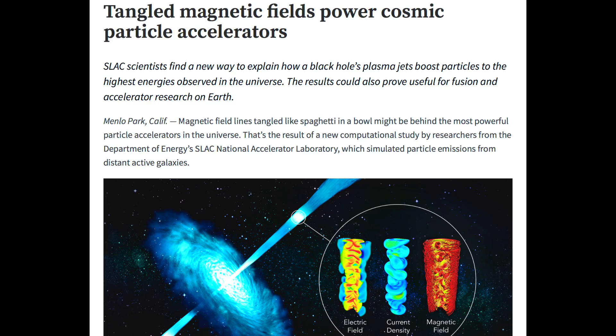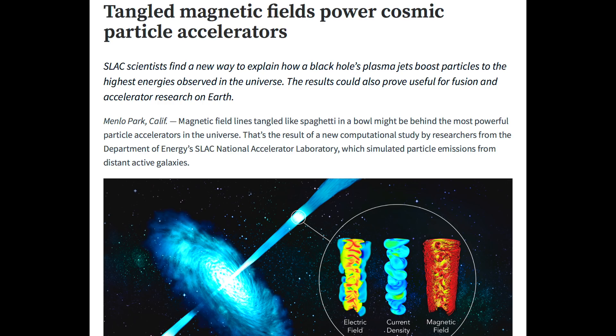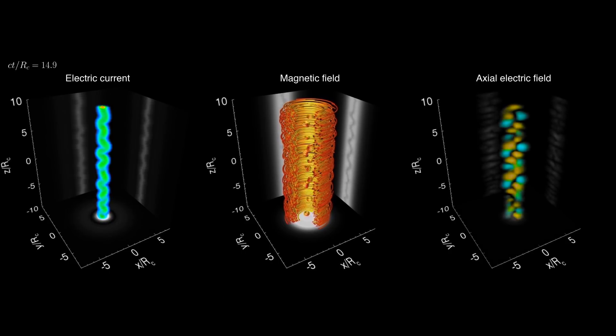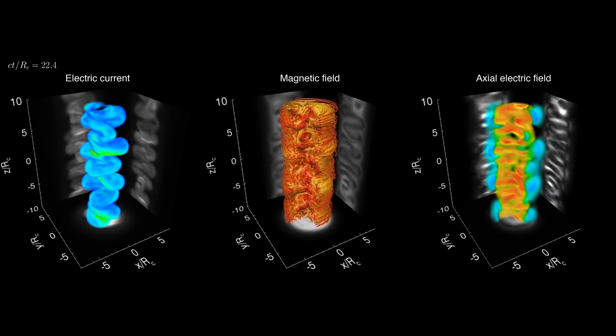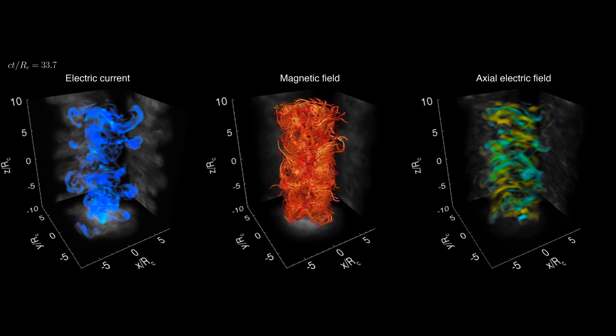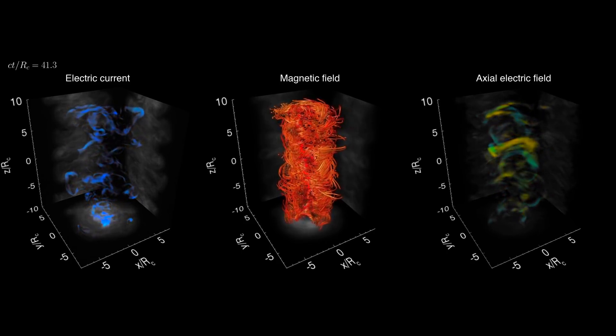But there is a better explanation. Acceleration. In 2018, SLAC, Stanford's national lab, demonstrated that magnetic fields in the jets fuel powerful electric currents that accelerate the particles to close to the speed of light, which allows them to shine in those x-rays and gamma rays.